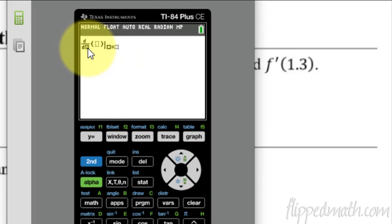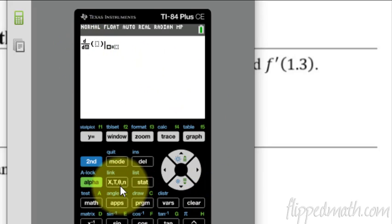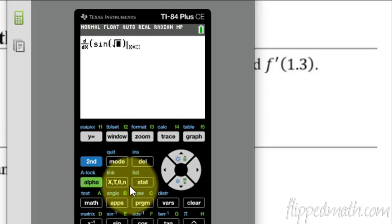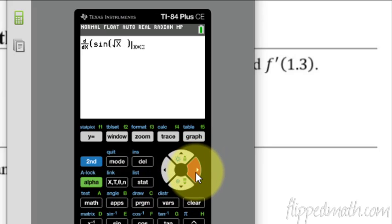Okay. So now here, we're going to take the derivative with respect to X. So I go ahead and type the X button right there. And then here we go ahead and plug in the function. So in this example, it's sine of square root of X. So let me hit sine and then second square root of X, the variable button. And now I can hit to the right and scroll out of that.